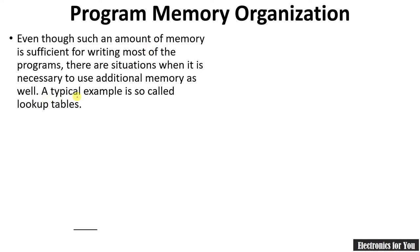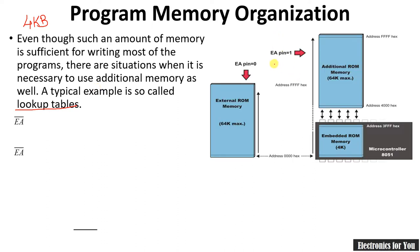Even though 4 kilobytes of internal memory is sufficient for most programs, in a few cases — for example a lookup table — it may go beyond 4 KB. If more memory is required, we use external program memory, which can be expanded up to 64 KB. So we have two types: internal memory of 4 KB and expanded external memory of up to 64 KB. The maximum capacity accessible by the 8051 is 64 KB.